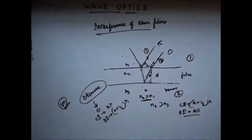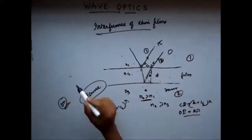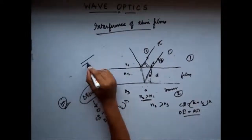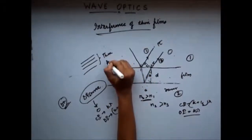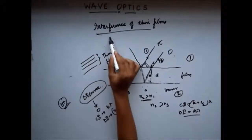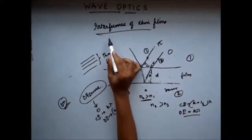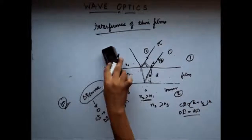Similarly, the different colours we observe in a peacock are because of interference. The surface of the peacock's skin has a multi-layered structure; these different layers behave as thin films, and interference occurs due to these thin films. That is why we see different colours — sometimes greenish, sometimes bluish — when we view the peacock from different angles.